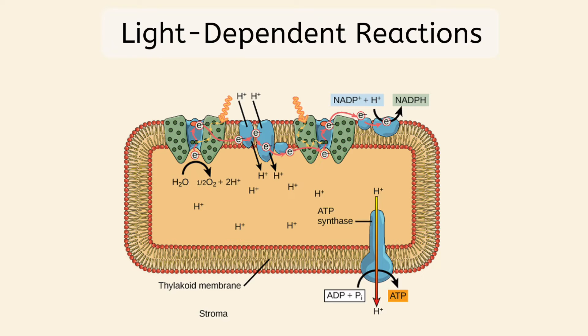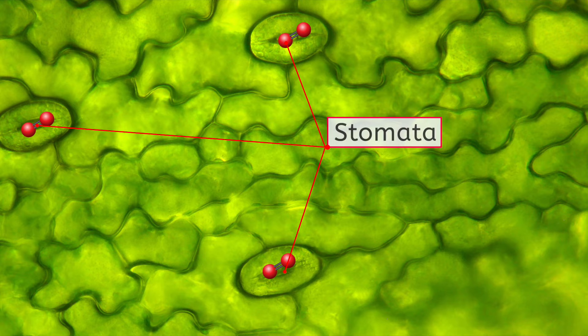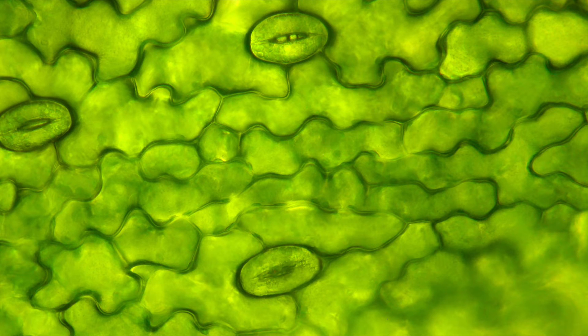Since the water molecules are split inside the thylakoid, they also help further build up the hydrogen concentration being created by the electron transport chain. And what happens to the oxygen atoms from water? They bond together to form O2, oxygen gas. The O2 is released from small pores on the plant's leaves, called stomata. Don't confuse stomata with stroma, the outer part of the chloroplast.